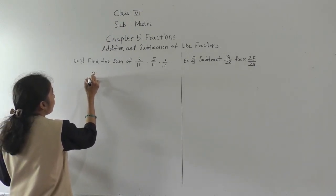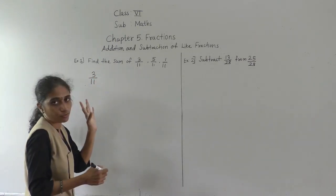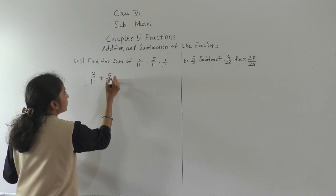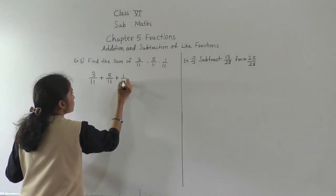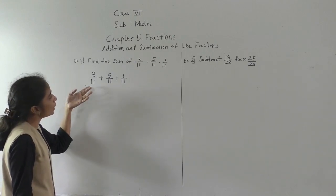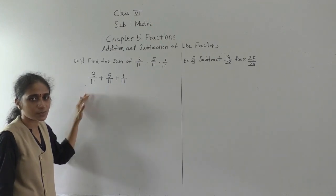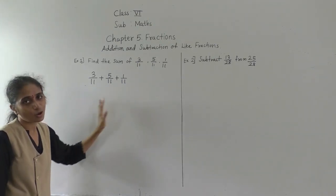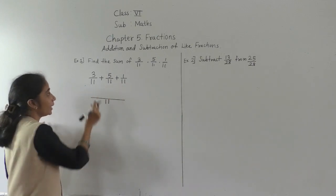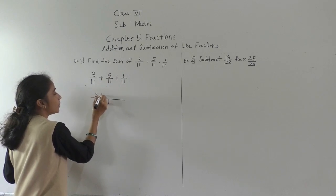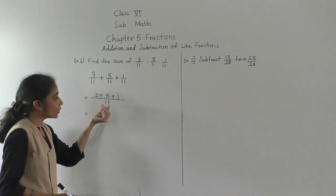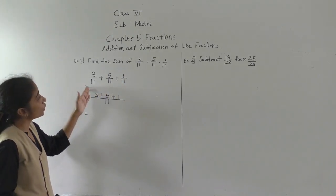So we have to add: 3 upon 11 plus 5 upon 11 plus 1 upon 11. If you observe, all the denominators are same, meaning these fractions are like fractions. So no need to make them same — they are already the same. Since denominators are same, we write the denominator only one time.